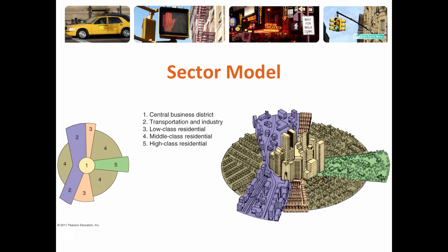When major transportation was added, we have the sector model. We still have the central business district in the middle and a zone of industry with lower class residential areas right next to it so people can get to work. Instead of having a wealthy class on the far outside, you would have some people who want to live very close to the downtown area extending outwards. This is sort of what Chicago looked like after cars, with the north side and south side of Chicago taking shape.